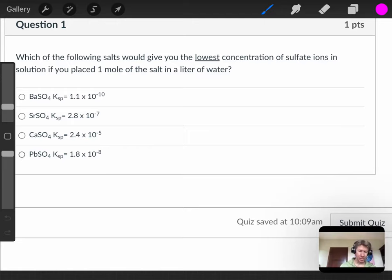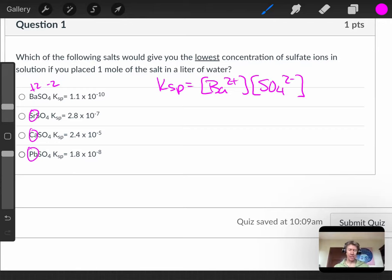So you'll notice that all of these are plus two, minus two ions, which means that all of their KSP expressions are the same. KSP is going to equal, they're all sulfates too, so Ba2+, SO42-. The Ba could be the strontium, the calcium, or the lead, but the important thing is the KSP expressions are all the same.